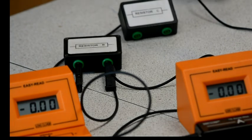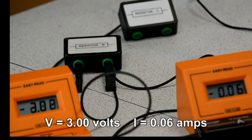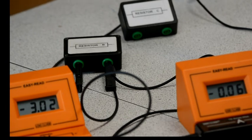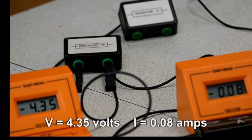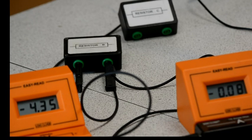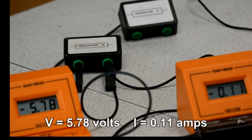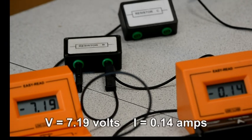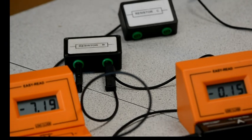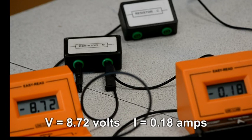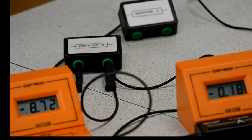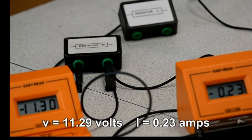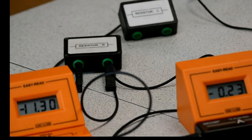Right, this time we have 3 volts and 0.06 amps. 4.35 volts, 0.19 amps. 5.78 volts, 0.11 amps. 7.19 volts, 0.14 amps. 8.72 volts, 0.18 amps. And 11.29 volts, 0.23 amps.